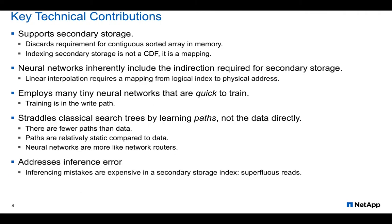Some of the key technical contributions of the work I'll be presenting today include the following. We wanted to support secondary storage from the very beginning, which means we can't treat the data as a CDF, because indexing data isn't a CDF — it's a mapping. It's turning a key into a physical address, and CDFs just don't support that directly. So we use neural networks instead of linear regression. Neural networks have the advantage that the indirection can be built into the training set, so we don't require a secondary index. Our key can be mapped straight to the physical address.